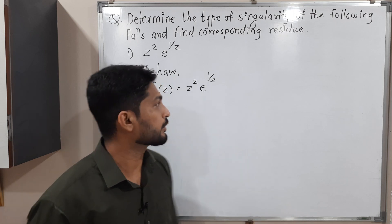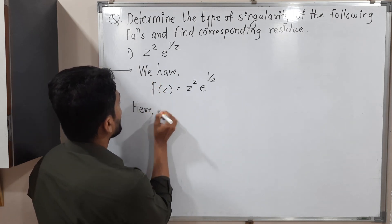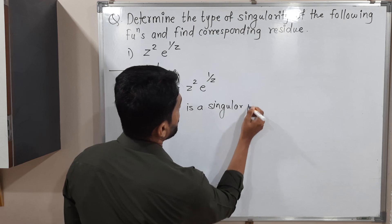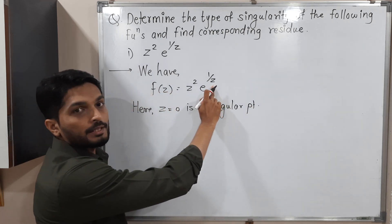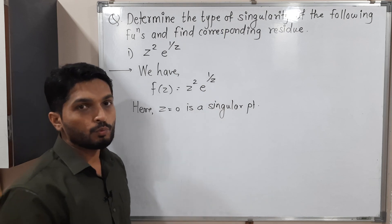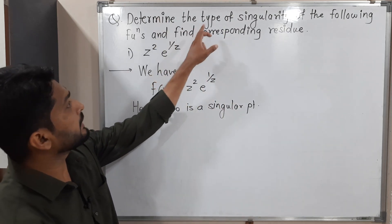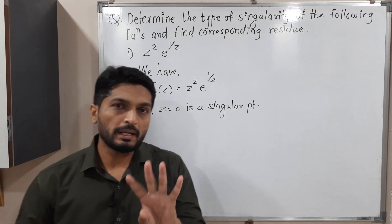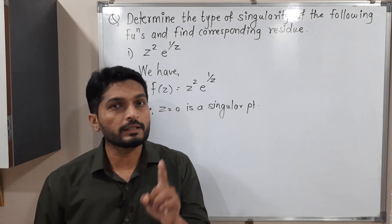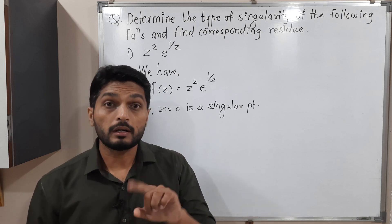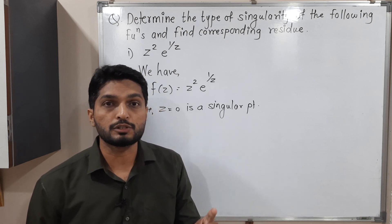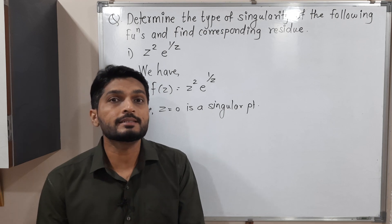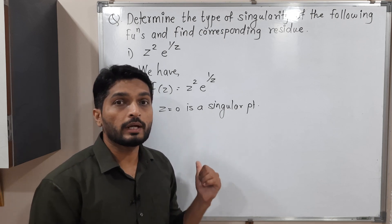So z = 0 is a singular point, since putting z = 0 gives a zero in the denominator and the function won't be analytic. The question asks us to determine the type of singularity. There are four types: isolated essential singularity, pole, removable singularity, and non-isolated essential singularity. Three of these can be found using Laurent series expansion.